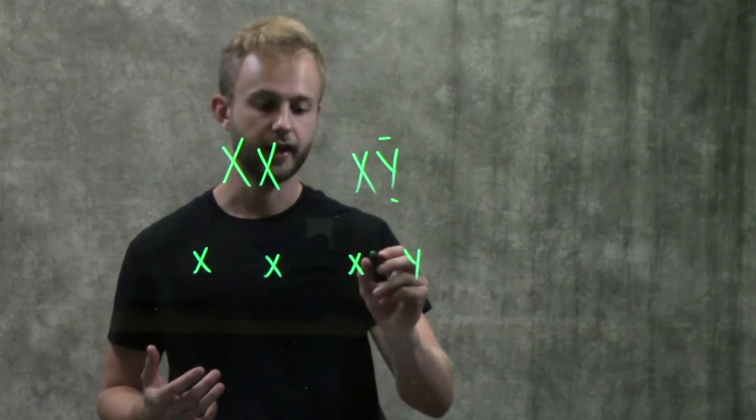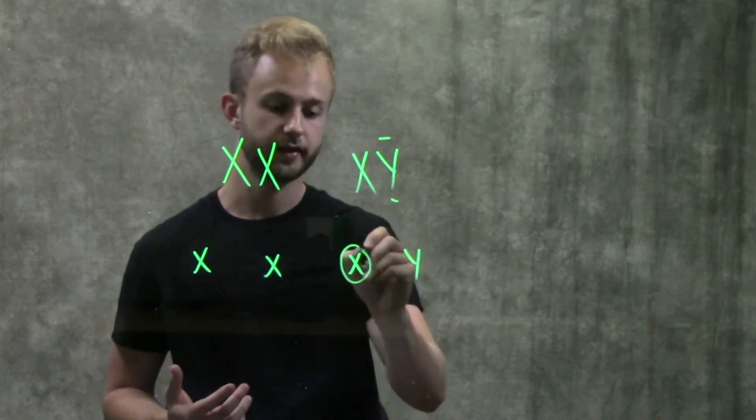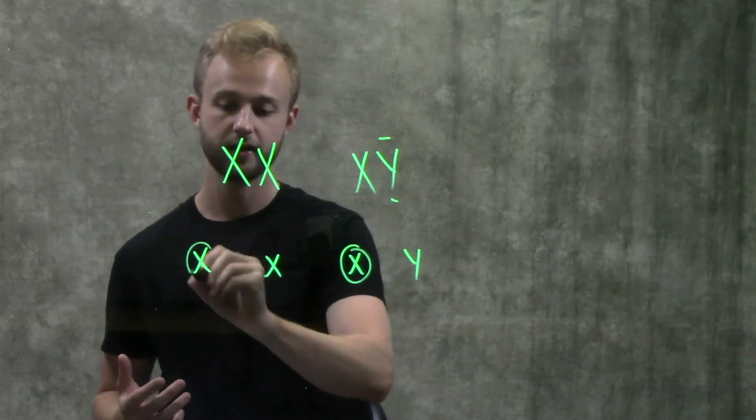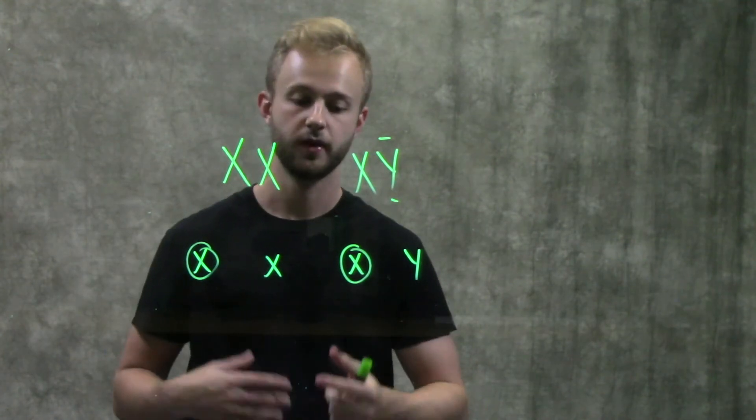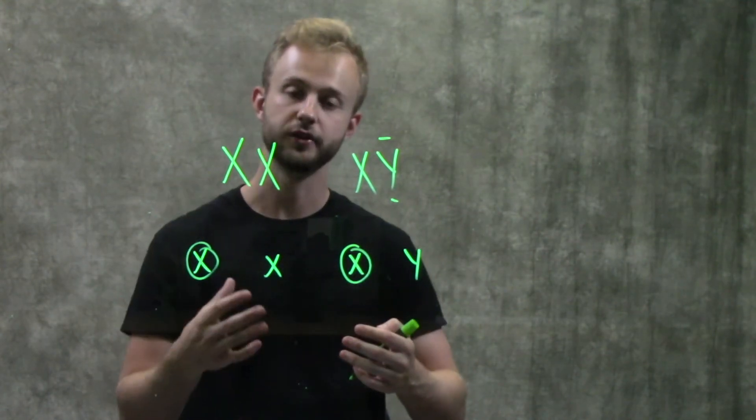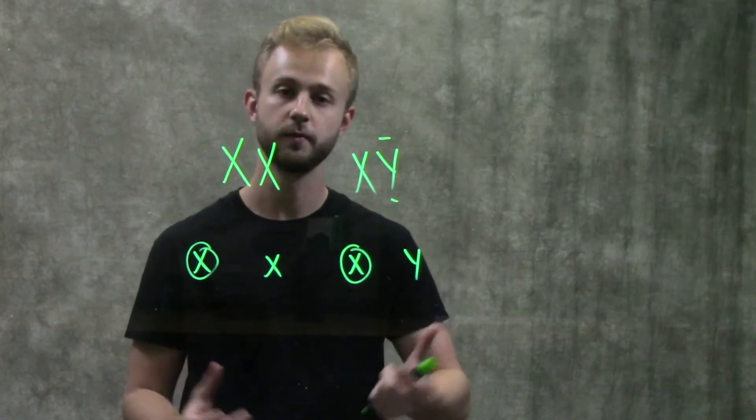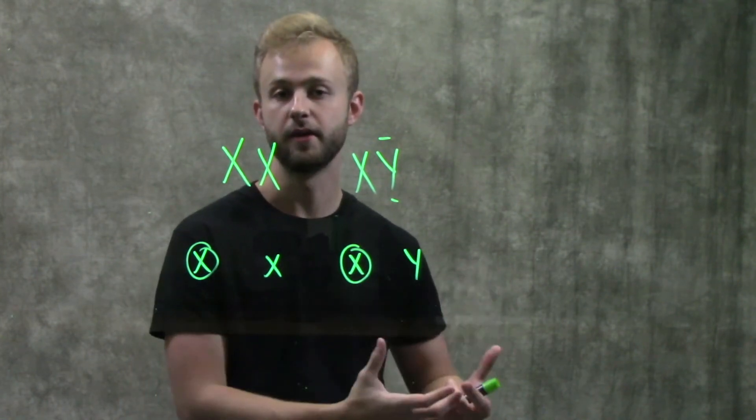For example, if a sperm with an X chromosome combined with an egg with an X chromosome, then it would be a girl. And if an egg with an X chromosome combined with a sperm with a Y chromosome, then it would be a male.